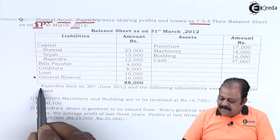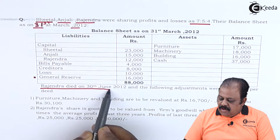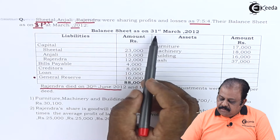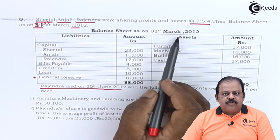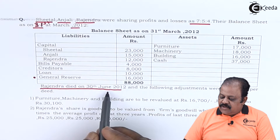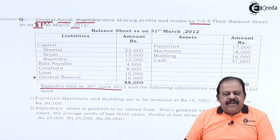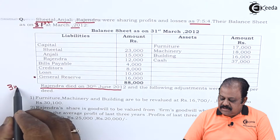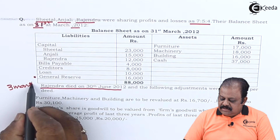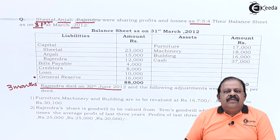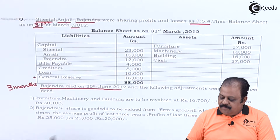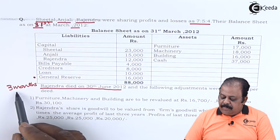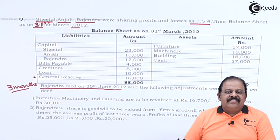Rajendra died on 30th June 2012. The balance sheet is given as on 31st March. Rajendra died on 30th June, so April, May, June — that is three months after the close of the last financial year. Rajendra was in the firm for a period of three months before his death.